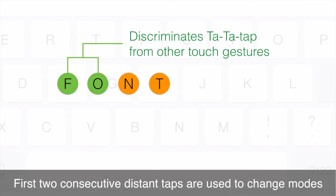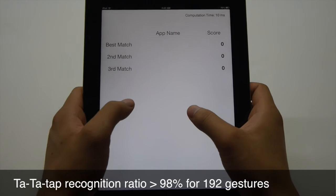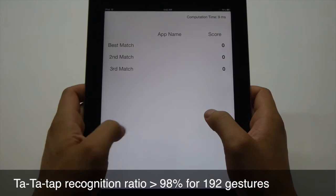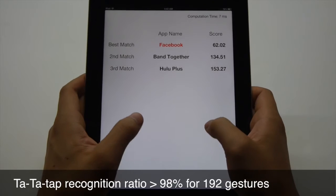First, two consecutive distance taps are used to change modes. Through the experiment, we showed that the Ta-Ta-Tap can be recognized with over 98% recognition ratio.